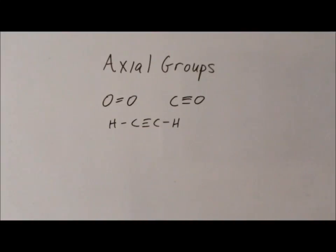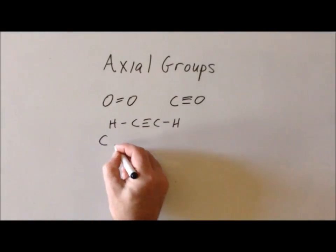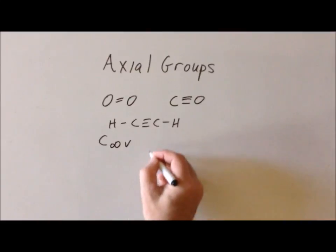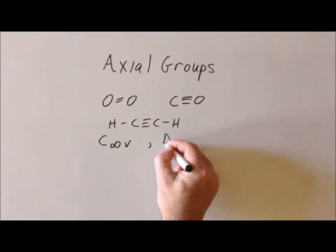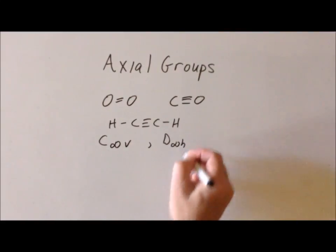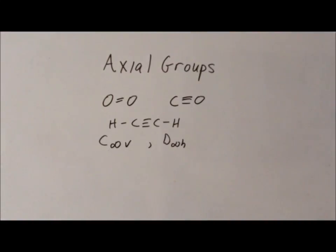There are two different ones. One is called C infinity V, and the other is D infinity H. These are the two and only two possible point group assignments for linear molecules.